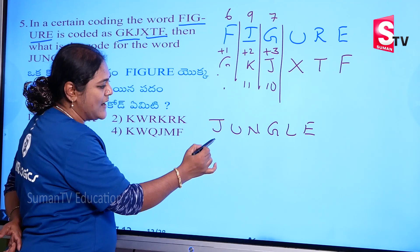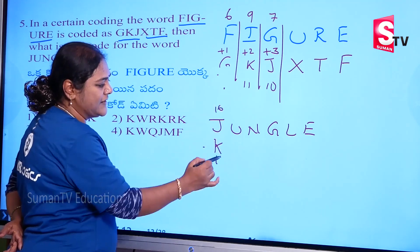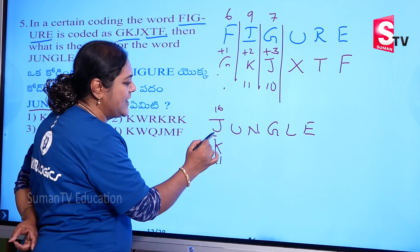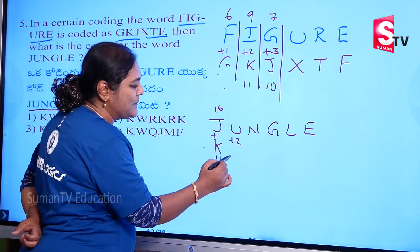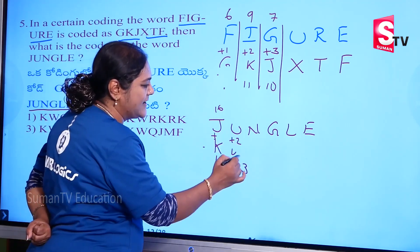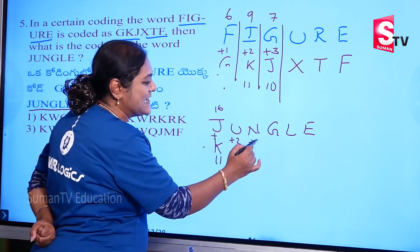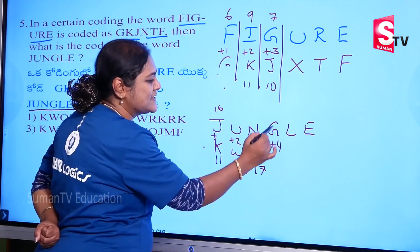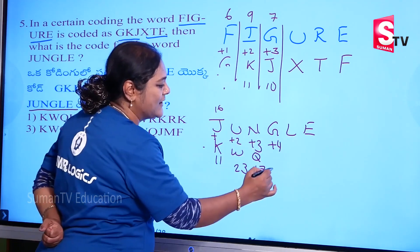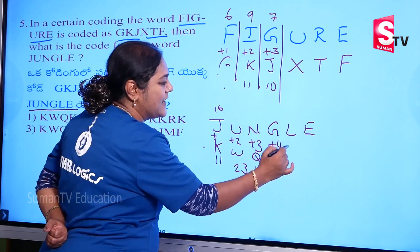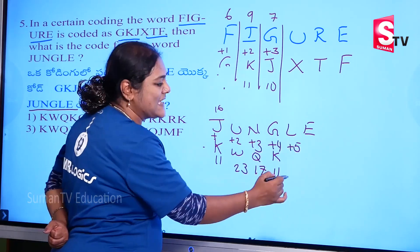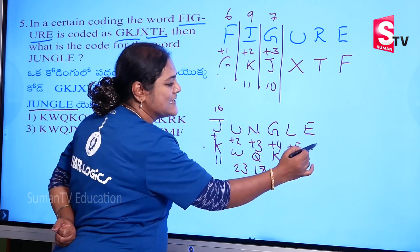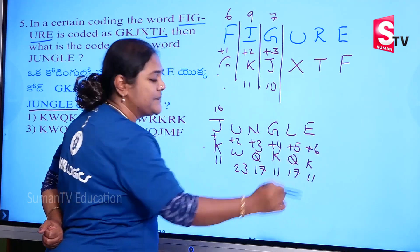Okay: 10 plus 1 = 11. See? 10 plus 1 = 11. Done. Next: U, plus 2 — 21 plus 2 = 23. And N: plus 3 — 14 plus 3 = 17. Q. Plus 4 — 7 plus 4 = 11, that gives K. Then plus 5 — 12 plus 5 = 17, and Q. Then 5 plus 6 = 11, and K.